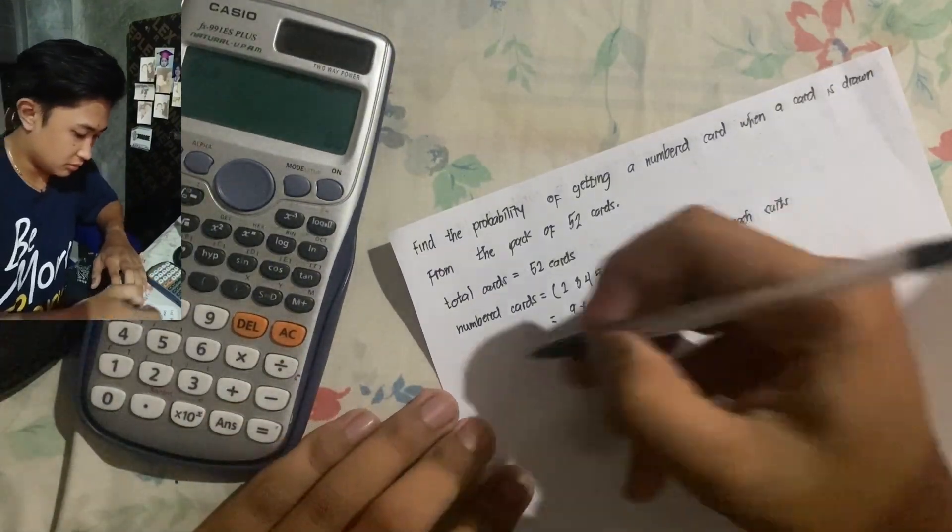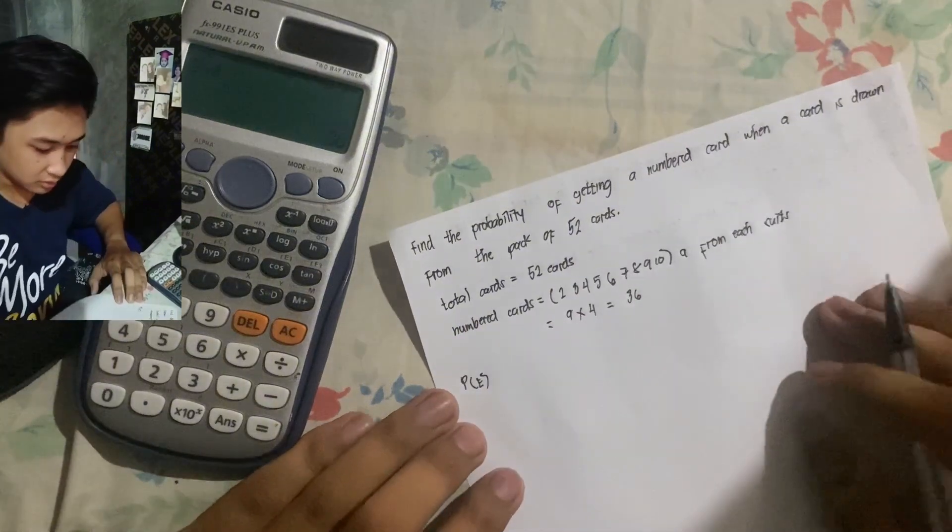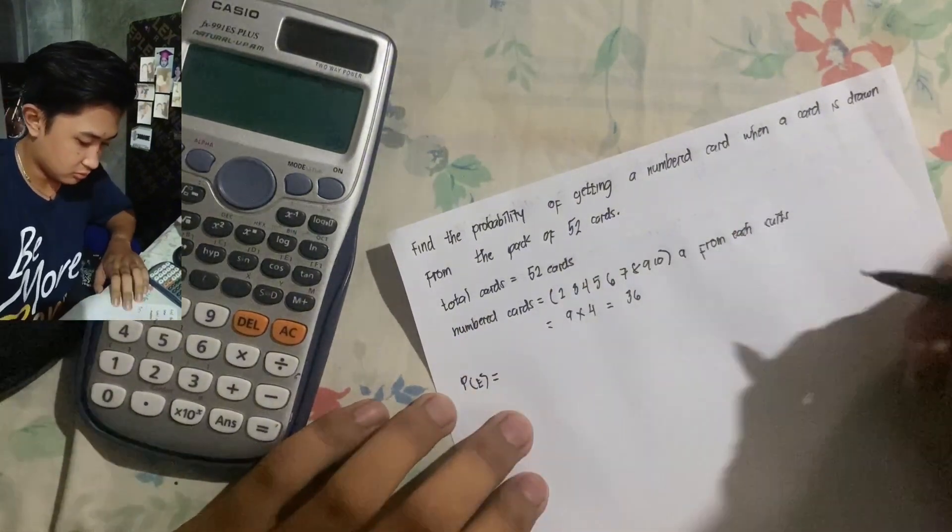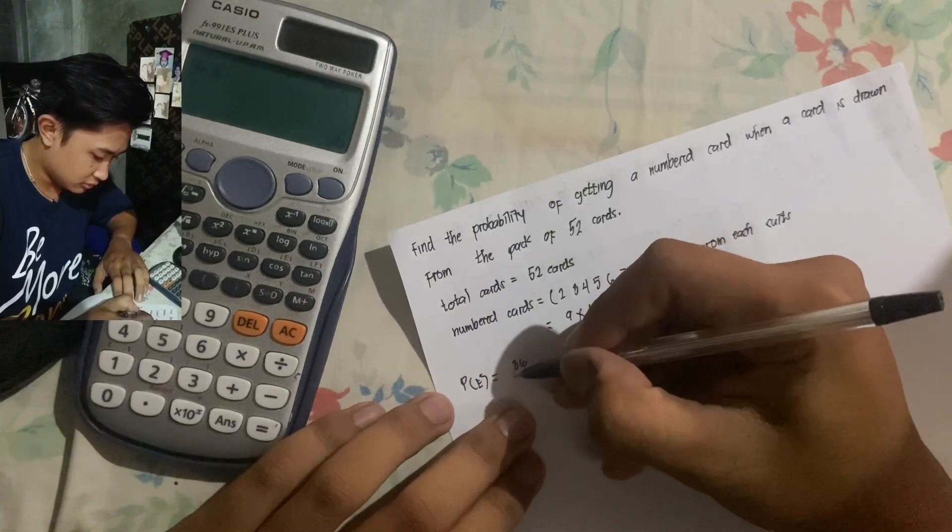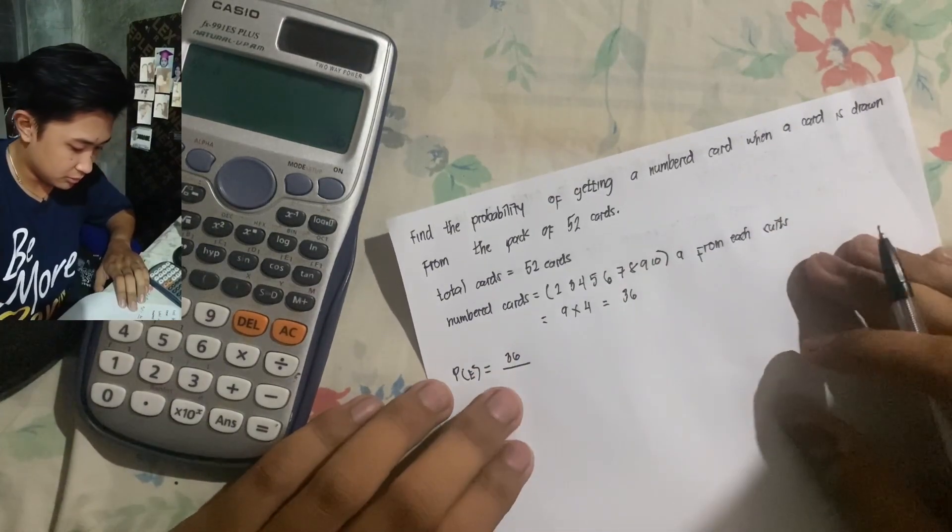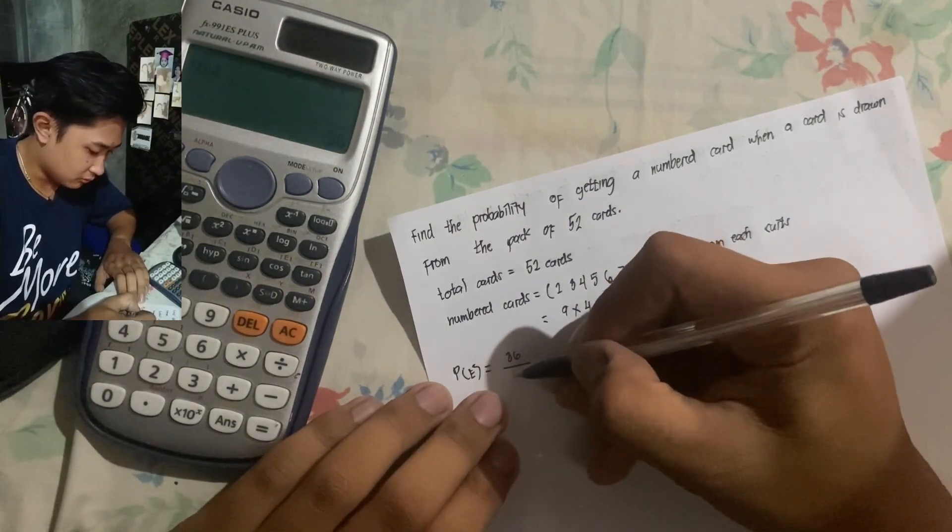And the probability of getting numbered cards is equal to numbered cards over the total cards. 36 over 52.